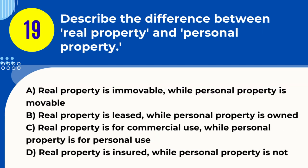Question 19. Describe the difference between real property and personal property. A. Real property is immovable, while personal property is movable. B. Real property is leased, while personal property is owned. C. Real property is for commercial use, while personal property is for personal use. D. Real property is insured, while personal property is not. Answer: A. Real property is immovable, while personal property is movable.